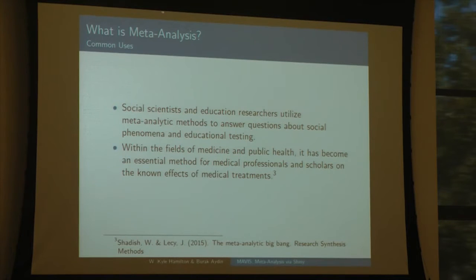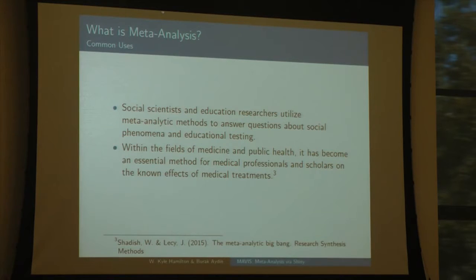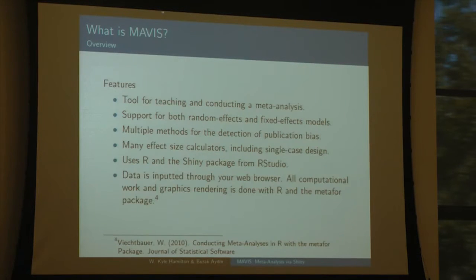Some common uses — the most important one is in the medical field. Often you'll take a bunch of studies from a treatment or a drug trial and combine them all into one group. That way it's more efficient than running one large clinical trial. The social sciences and education research also use this a lot. We use it to look at effects over a large set of populations to see if there is one true effect.